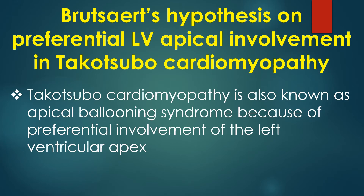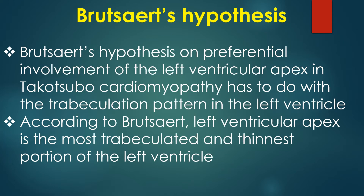Brutzard's hypothesis addresses the preferential left ventricular apical involvement in Takotsubo cardiomyopathy. Takotsubo cardiomyopathy is also known as Apical Ballooning Syndrome because of this preferential involvement of the left ventricular apex. The hypothesis relates to the trabeculation pattern of the left ventricle.